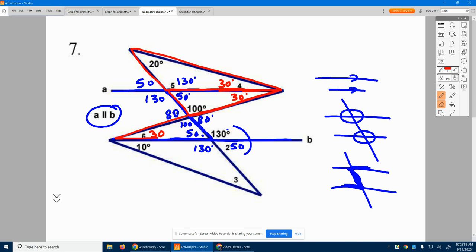And finally, I see the 130 and 10 in this triangle here. That adds up to 140, so angle 3 has to be 40. And there, we have done every angle on the page.